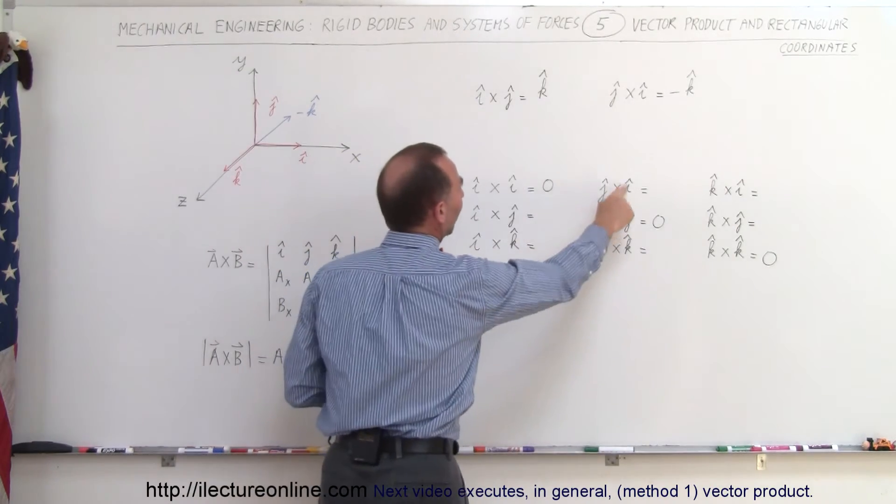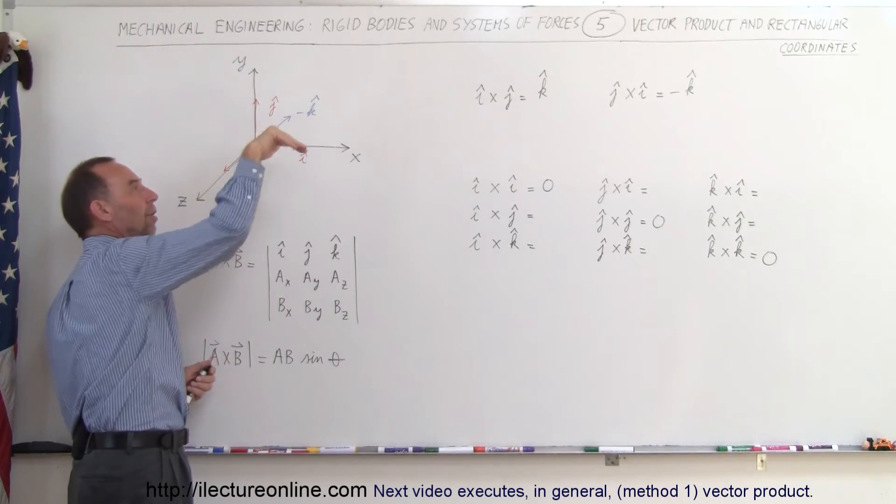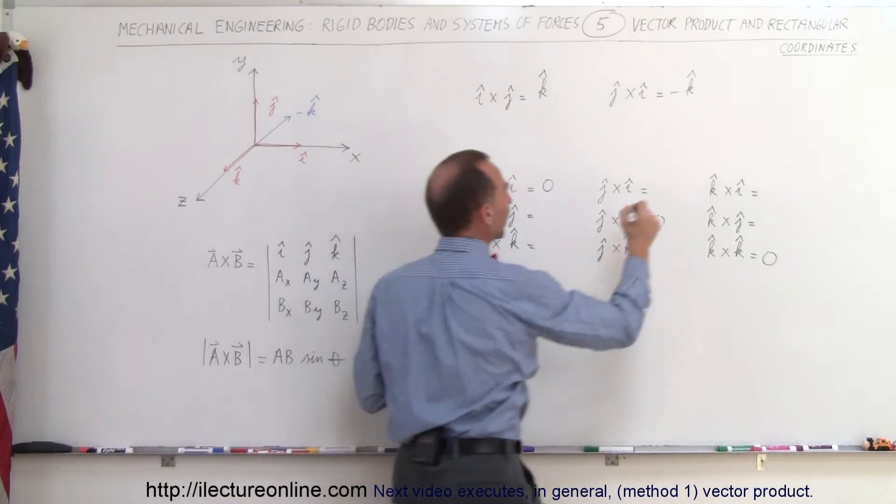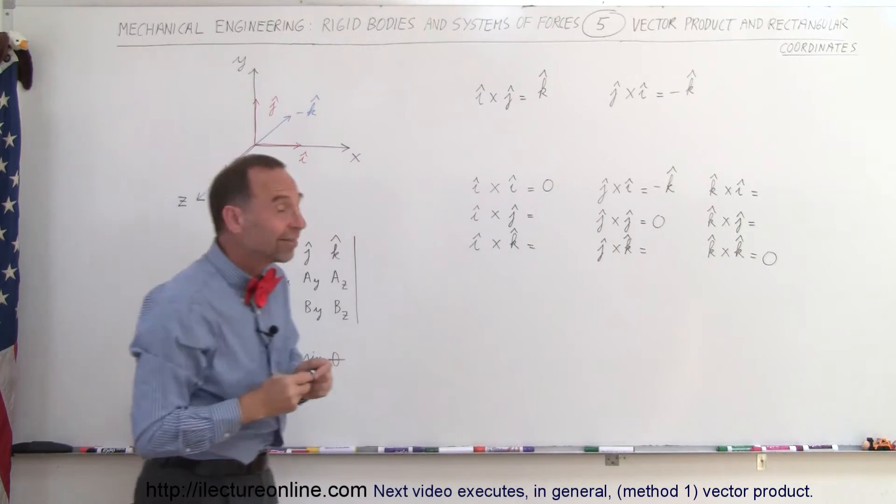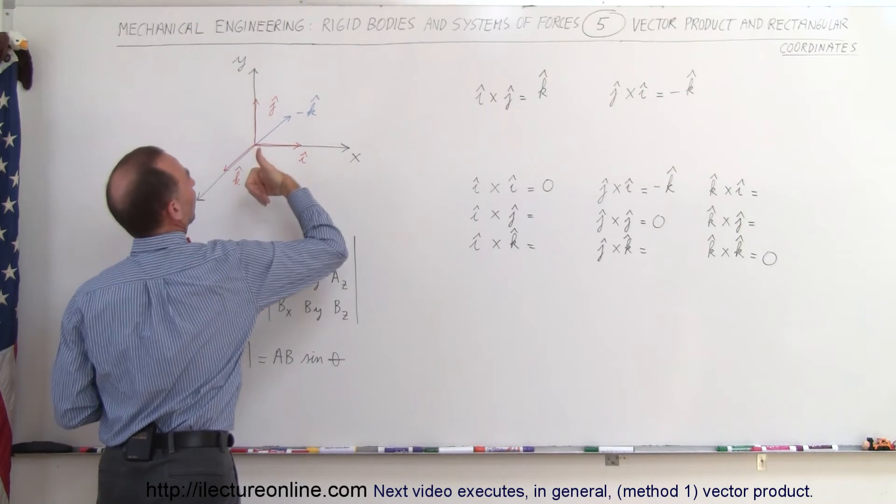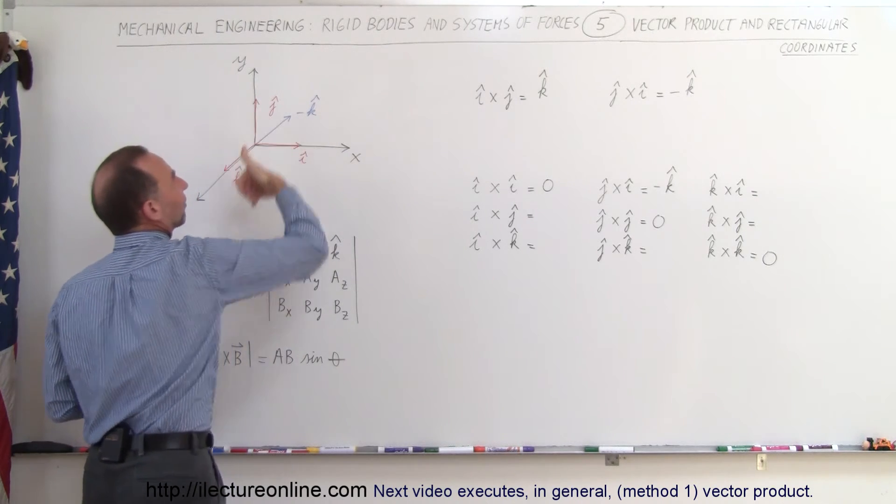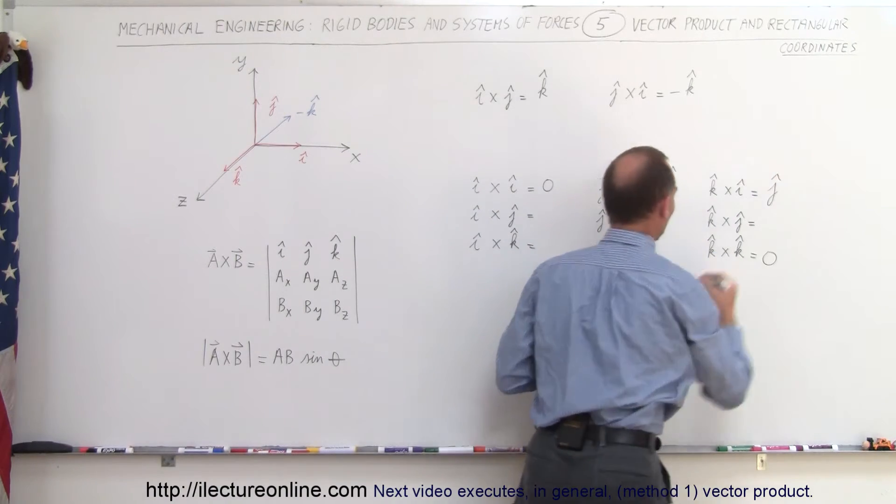So now we have J cross I, which we already did. So we go J cross I, thumb into the board, that's a minus K vector. And if we do K cross I, let's see what we get. We point our fingers in the direction of K, then we curl our fingers in the direction of I, our thumb points upward, so that's a positive J. So we have positive J as a result here.